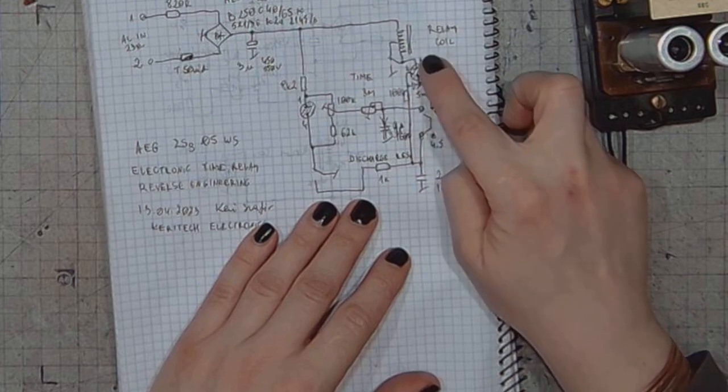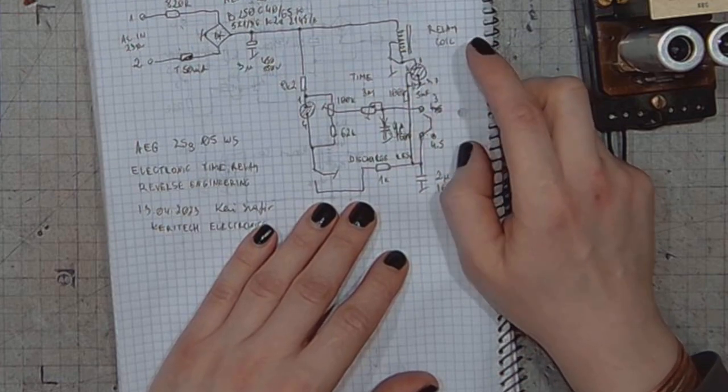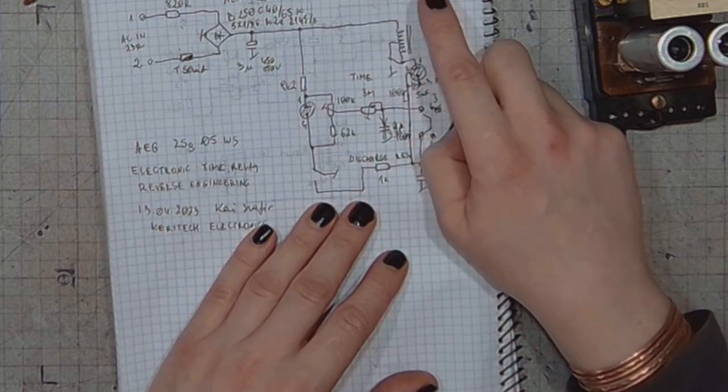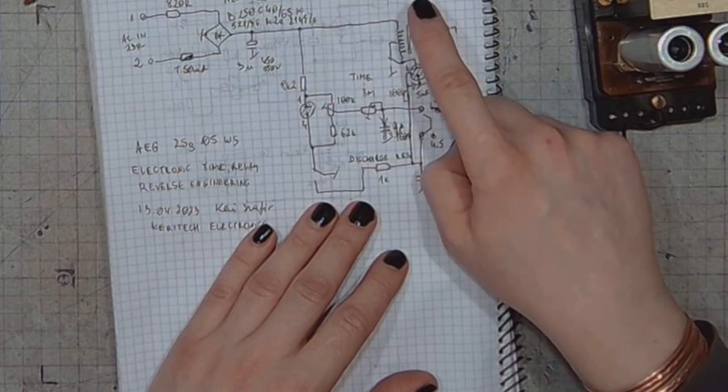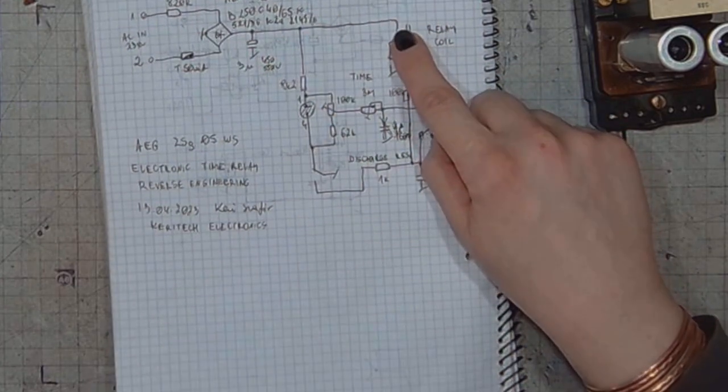Then the thyratron will start conducting, and current will flow through the relay coil.